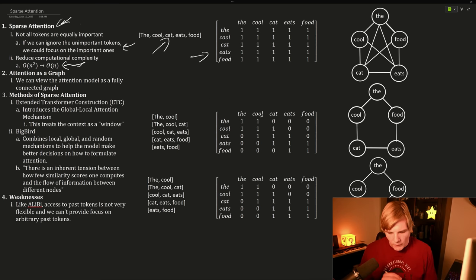And so as we add tokens, we have an n by n matrix, which leads to our quadratic complexity.